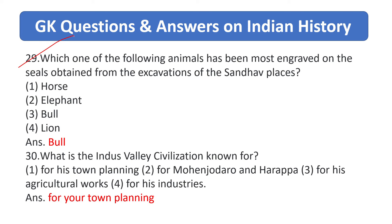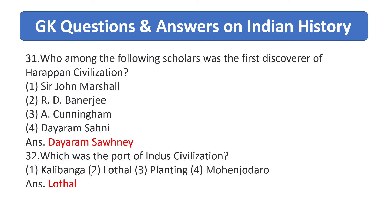Which of the following animals has been most engraved on the seal obtained from excavation? Answer is bull. What is the Indus Valley civilization known for? Answer is town planning.